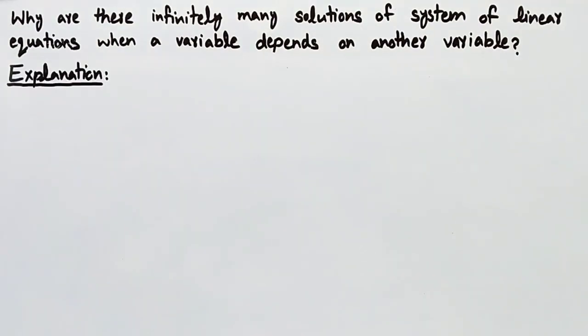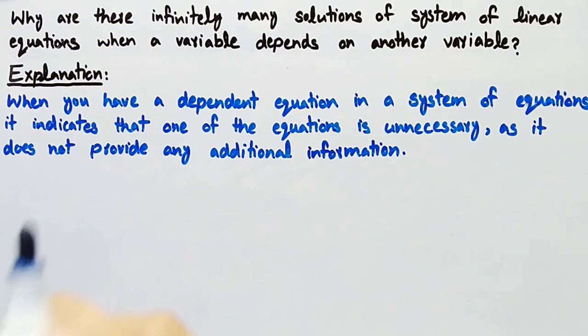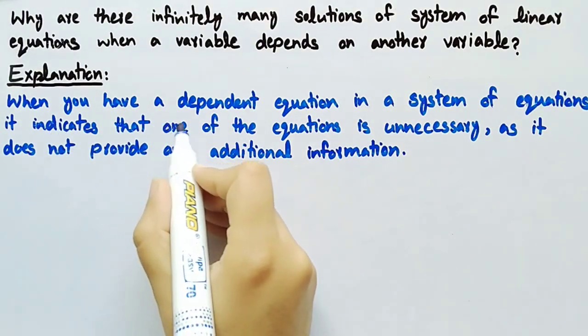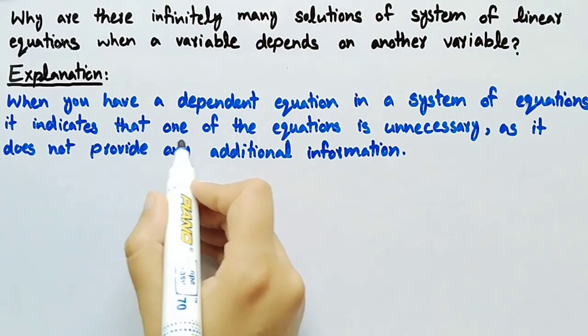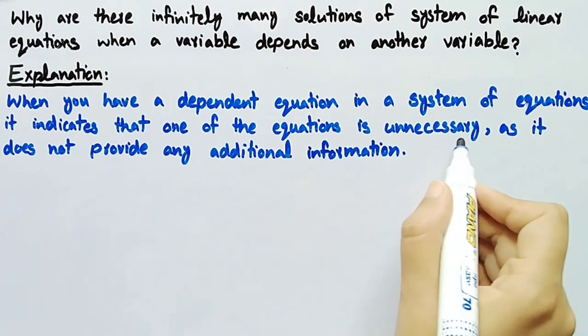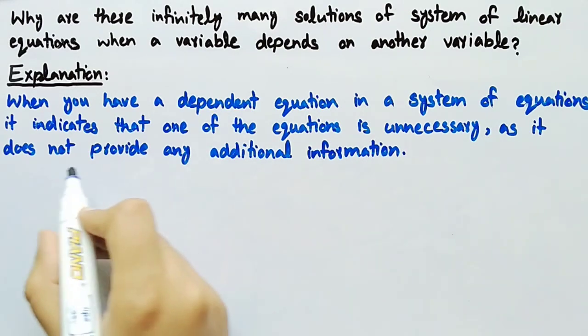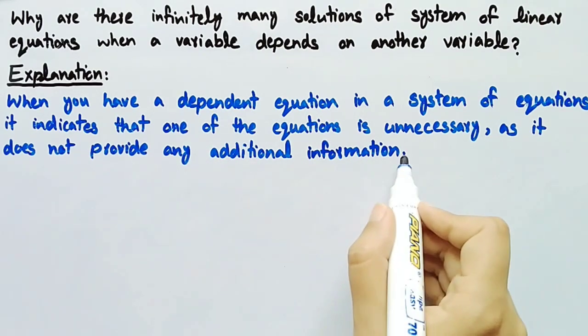Let's see its further explanation. When you have a dependent equation in a system of equations, it indicates that one of the equations is unnecessary, as it does not provide any additional information.